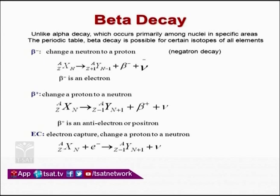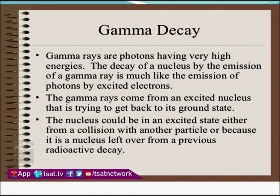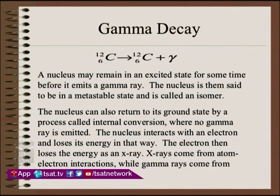Gamma rays are high-energy photons. The decay of a nucleus by emission of gamma rays is much like the emission of photons by excited electrons. Gamma rays come from an excited nucleus trying to get back to the ground state. In the formation of a nucleus, the nucleus may remain in an excited state for some time before emitting a gamma ray — the nucleus is then said to be in a metastable state and is called an isomer.